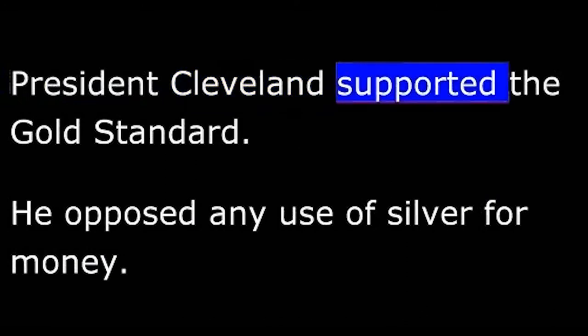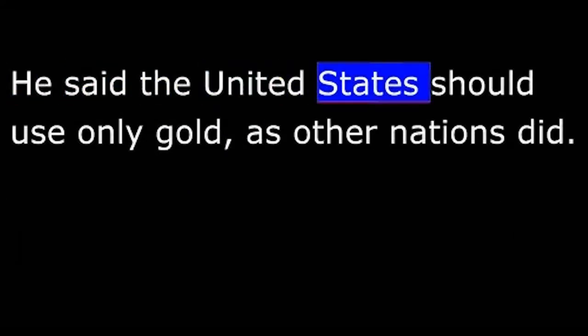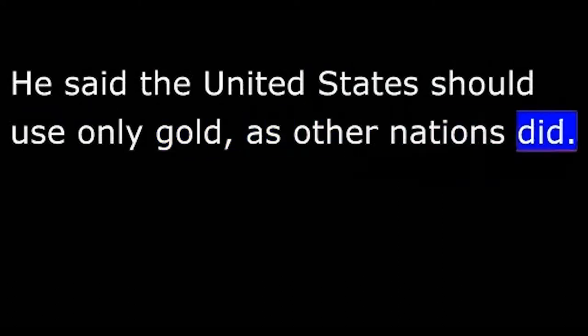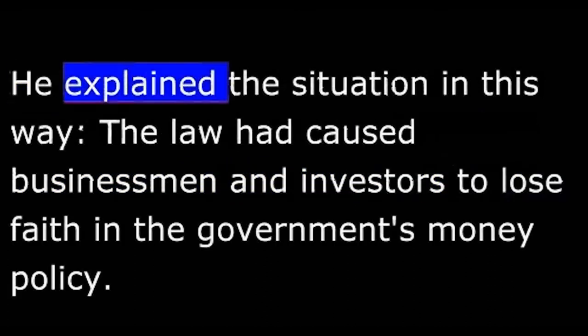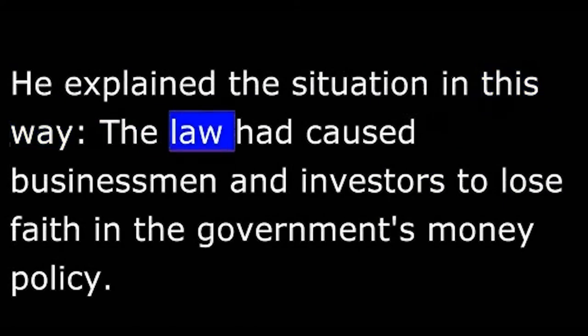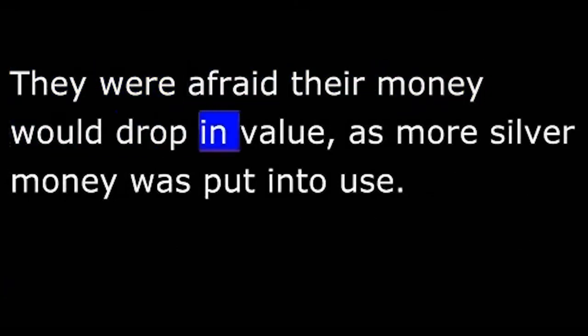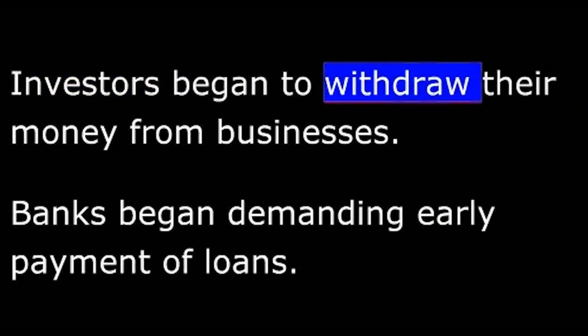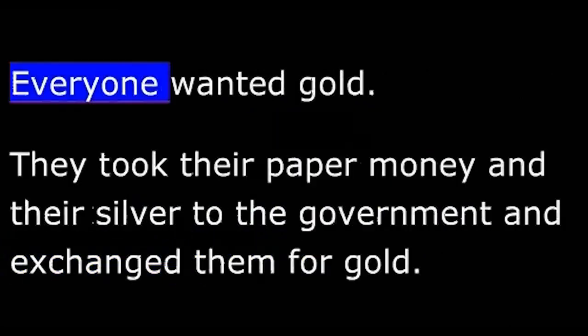President Cleveland supported the gold standard. He opposed any use of silver for money. He said the United States should use only gold, as other nations did. President Cleveland was sure the silver purchase law of 1890 had caused the economic depression. He explained the situation in this way: The law had caused businessmen and investors to lose faith in the government's money policy. They were afraid their money would drop in value as more silver money was put into use. Investors began to withdraw their money from businesses. Banks began demanding early payment of loans. Everyone wanted gold.